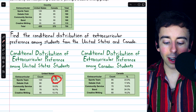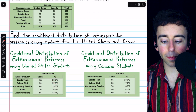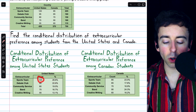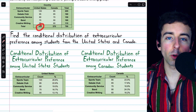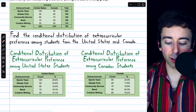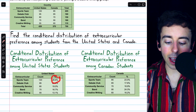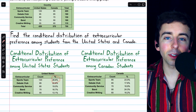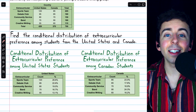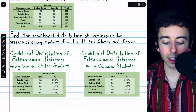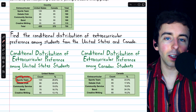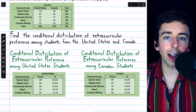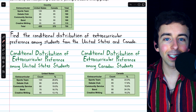This percent, for example, is 120 divided by 420. This means that 28.6% of United States students chose joining a sports team as their preferred extracurricular activity.